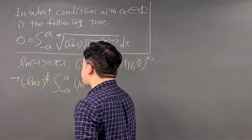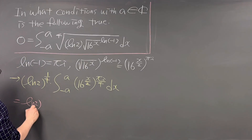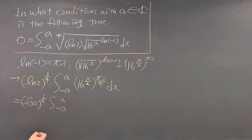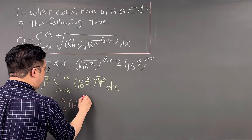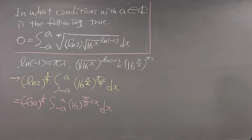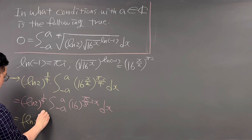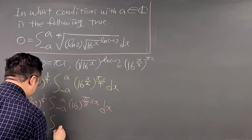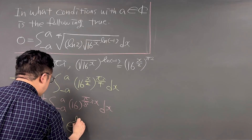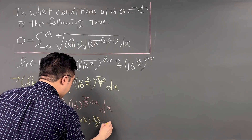Continuing to simplify, we still have LN(2)^(1/4) times the integral from negative A to A. The integrand becomes 16 to the power of (πi/8)·x. Then we can rewrite this with base e as e to the power of LN(16) times x times π/8 times i, dx.